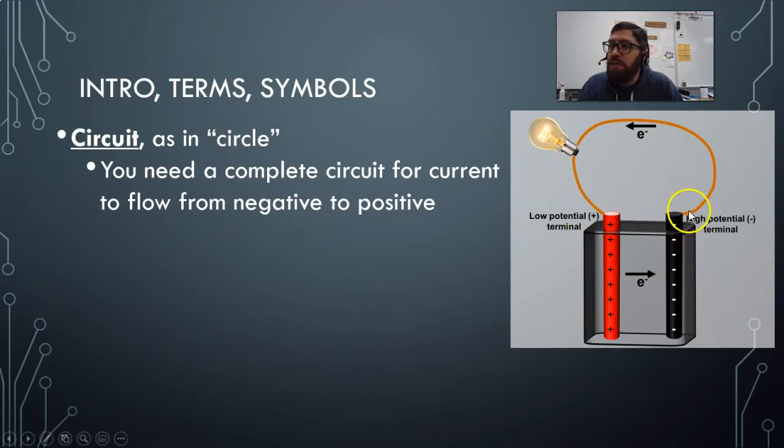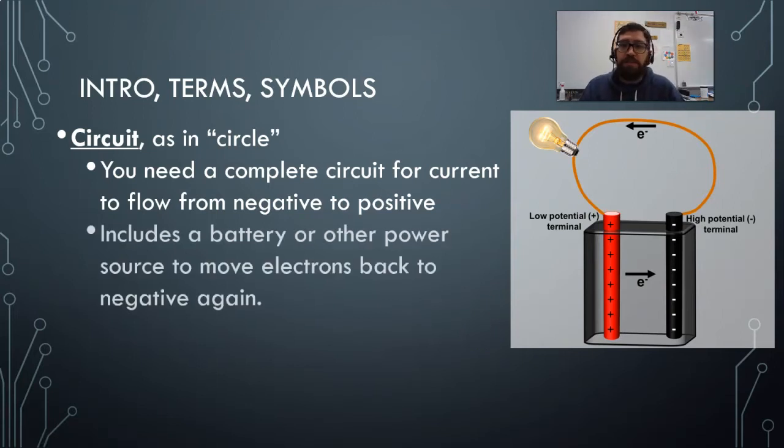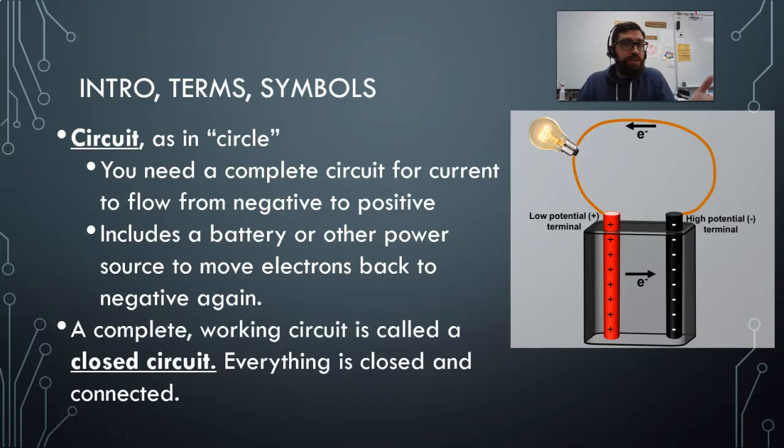First, we use the word circuit as in circle. That's what circuit sounds like, and that's what it means. We have to have a complete circuit, a complete pathway for current to flow from negative to positive, not only within the battery, but also here. Notice electrons have to have a complete pathway to flow back around from the negative to the positive. This is a complete circuit, this is a working circuit.